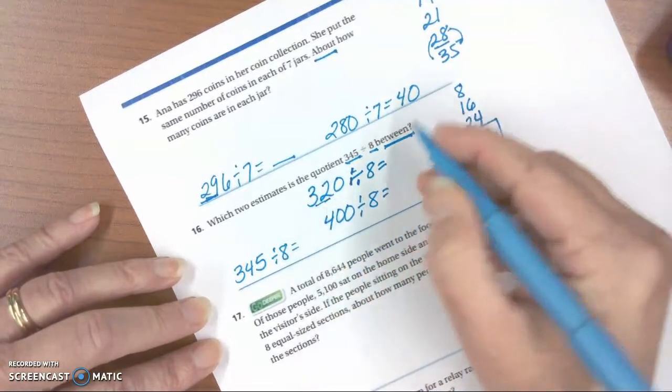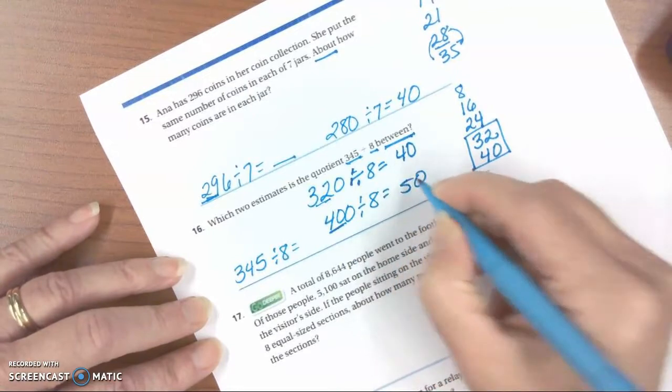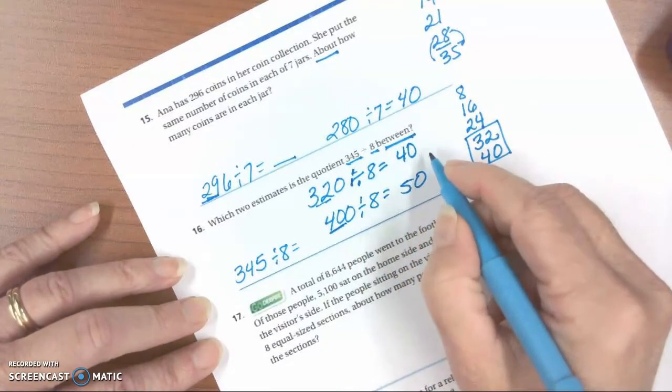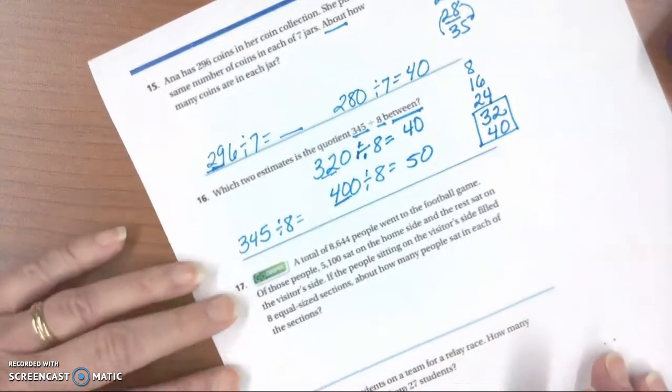So 32 tens divided by 8 is 4 tens and 40 tens divided by 8 is 5 tens, which is 50. So there's our estimate.